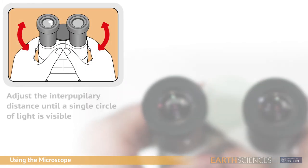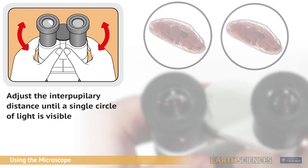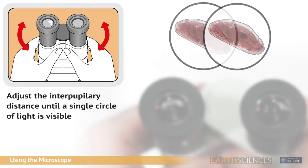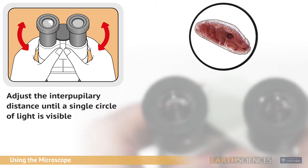Next, you need to adjust the interpupillary distance. If you look through the eyepieces and see two images, the interpupillary distance is not correct. Slide the eyepieces closer together or farther apart until the two fields merge to form a single circle of light.